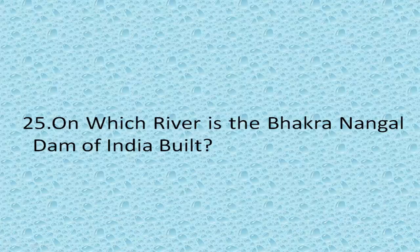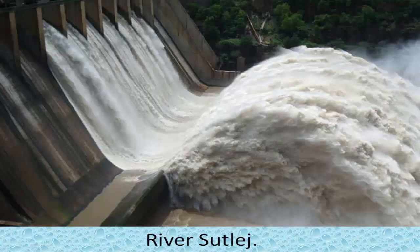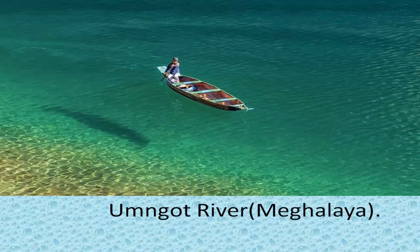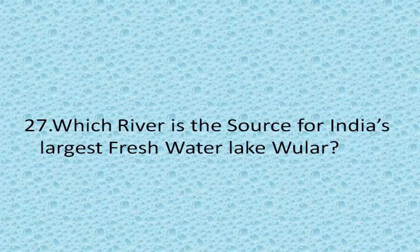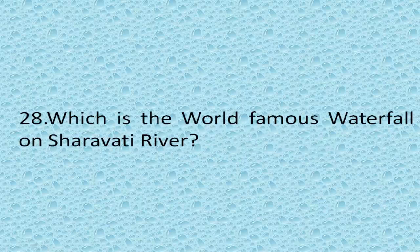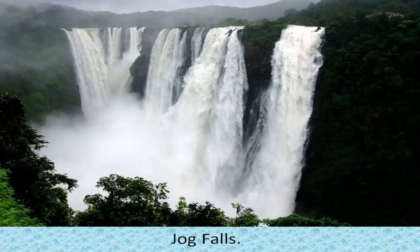On which river is the Bakra Nangal Dam built? River Sutlej. Which is the cleanest river in India? Umgot River, in the state of Meghalaya, is considered to be India's cleanest river. Which river is the source for India's largest freshwater lake, Wular? Jhelum River.